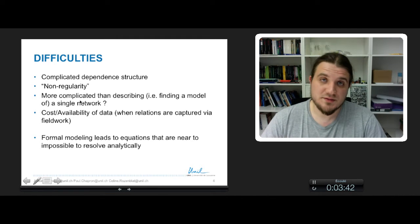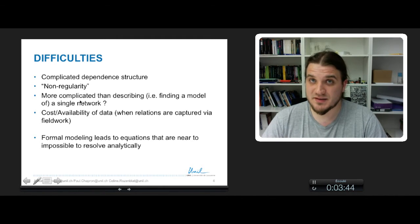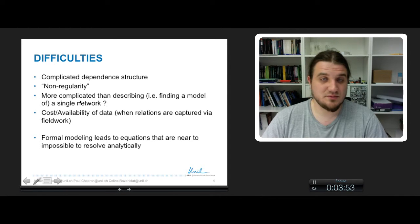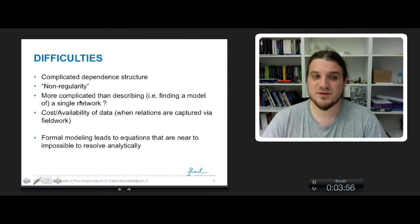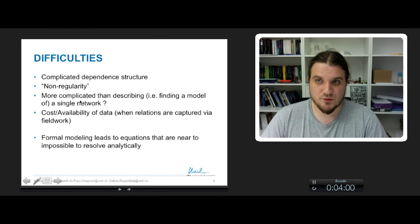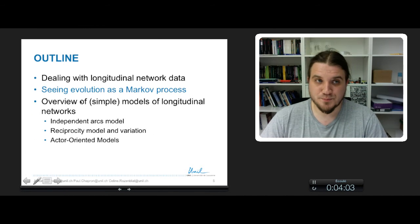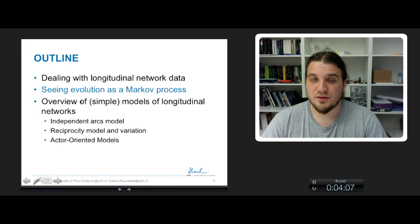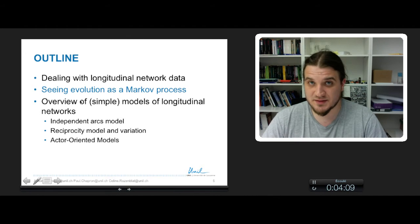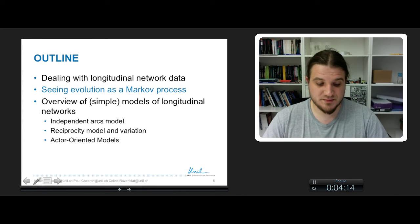And the final difficulty is that the mathematics to deal with the model of networks evolution are very complicated, and the equations are almost always impossible to resolve analytically. So we will see how it can be done by considering the evolution of a network as a Markov process. And this will be developed in the second part of the course. Thank you.